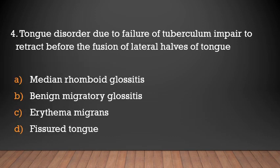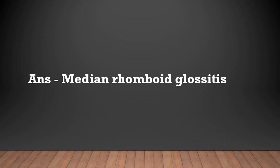A tongue disorder due to failure of the tuberculum impar to retract before the fusion of the lateral halves of the tongue — the answer is median rhomboid glossitis. Median rhomboid glossitis leads to failure of the tuberculum impar to retract before the fusion of the two lateral halves of the tongue.